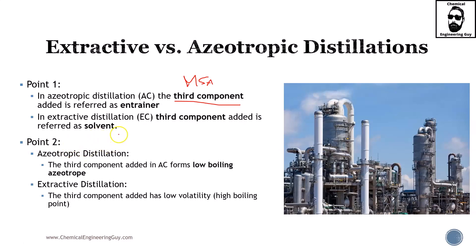Point number two: in azeotropic distillation, the third component added will yield a low-boiling azeotrope, or low-boiling-point azeotrope. In extractive distillation, on the other hand, there will not be a low boiling point. Actually, the reverse is true — it's going to have a very high boiling point because we want the solvent to remain as a liquid.